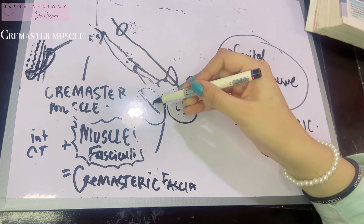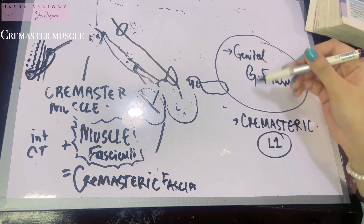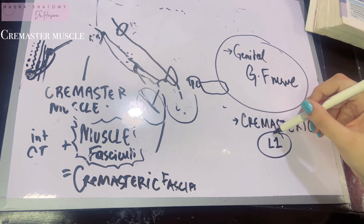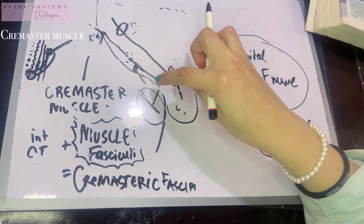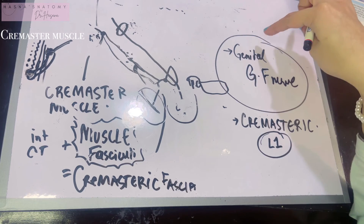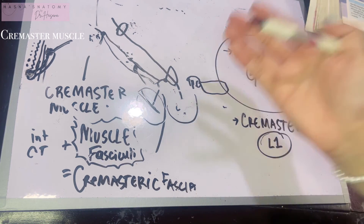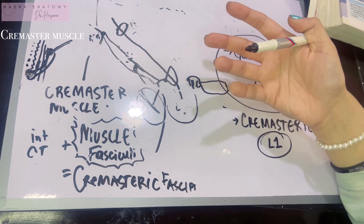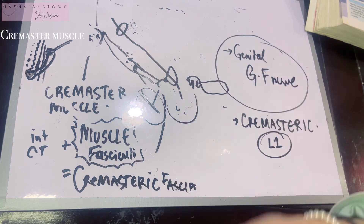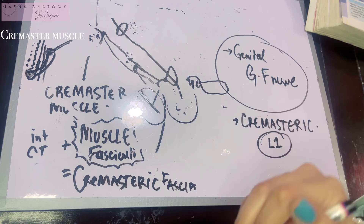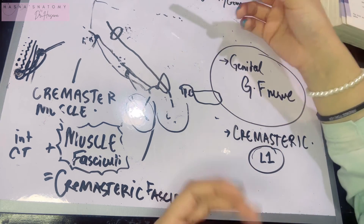The nerve supplying the anteromedial part of the thigh has the same root value as the genital branch of the genitofemoral nerve. Therefore, since they share the same root value (L1), stimulating that thigh nerve simultaneously stimulates the nerve to the cremaster, resulting in reflex contraction of the cremasteric muscle shown by elevation of the testes.